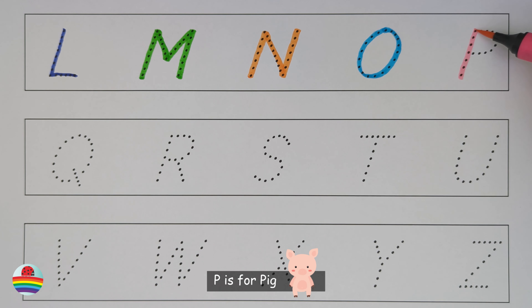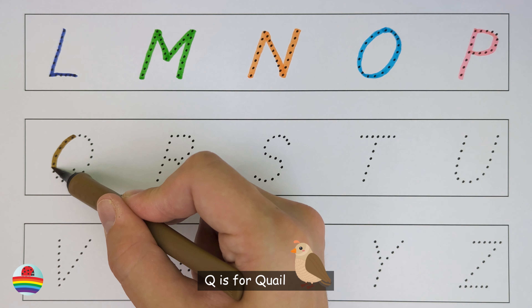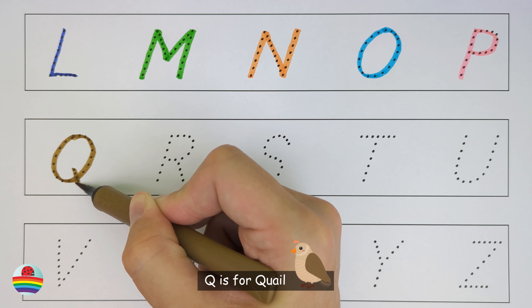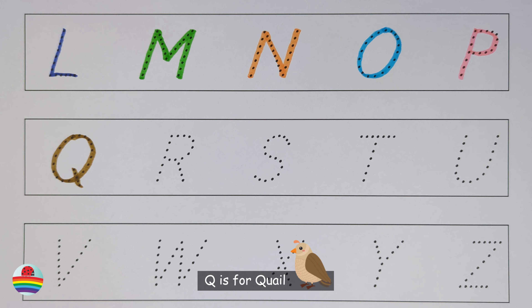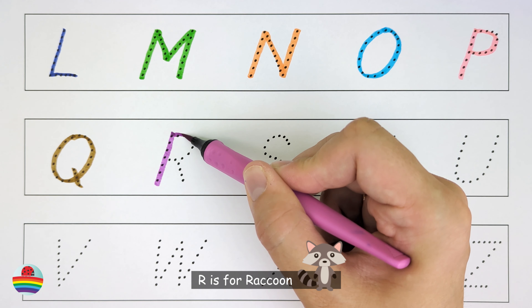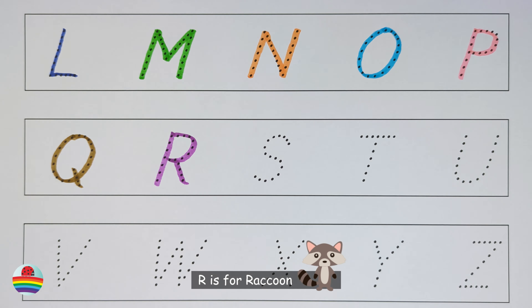P. P is for pig. P. Q. Q is for quail. Q. R. R is for raccoon. R.